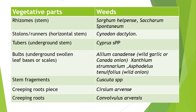Here a table shows vegetative propagules of perennial weeds. First is rhizome — a modification of stem, found in Sorghum halepense and Saccharum spontaneum. Second is stolons and runners — horizontal stems found in Cynodon dactylon, also called dub grass. Third is tubers — underground stems, found in Cyperus species. Fourth is bulbs — underground swollen leaf bases or scales, seen in wild garlic (Allium canadense), Xanthium strumarium, and Asphodelus tenuifolius (wild onion). Fifth is stem fragments, example Cuscuta species. Also creeping roots — Cirsium arvense and Convolvulus arvensis.